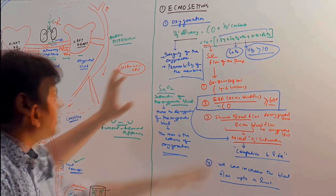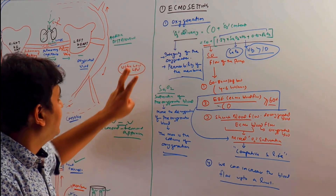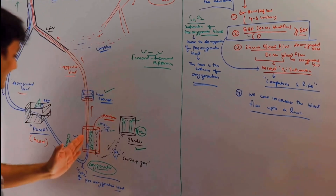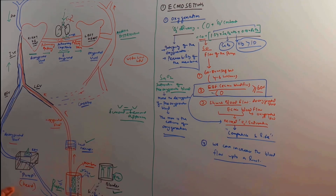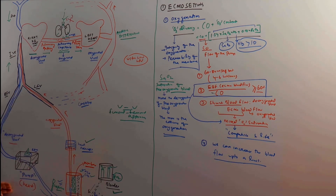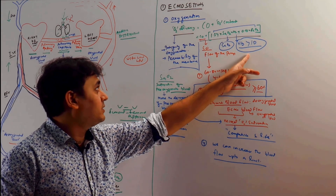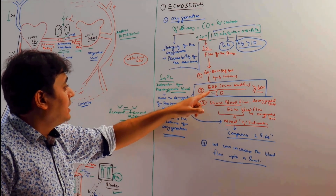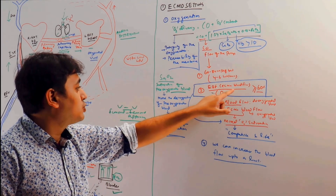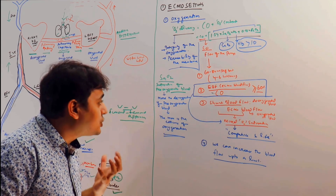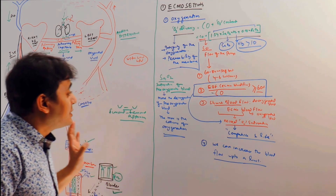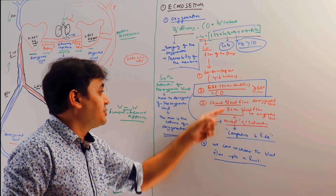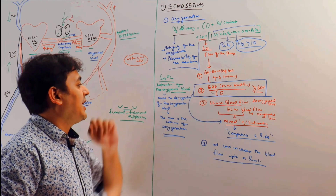To summarize how to improve oxygenation: three things. First, oxygen delivery — ensure the integrity of the membrane is intact. Second, cardiac output — the ECMO blood flow should be 60 to 80 ml per kg, and it cannot increase beyond a certain limit without producing complications. That is why we keep hemoglobin more than 10 to optimize oxygen delivery. The ECMO blood flow divided by cardiac output must be more than 60% — if a patient's cardiac output is 10 liters, they must receive more than 6 liters of ECMO blood flow.